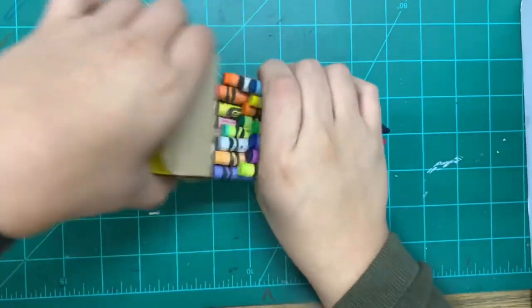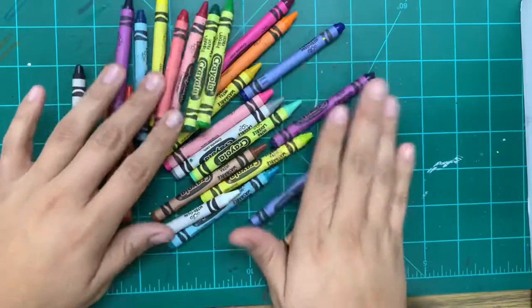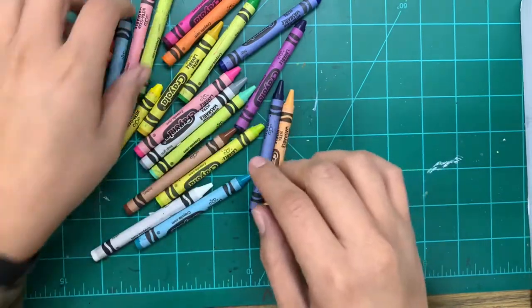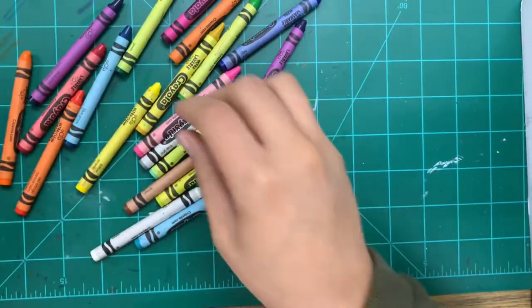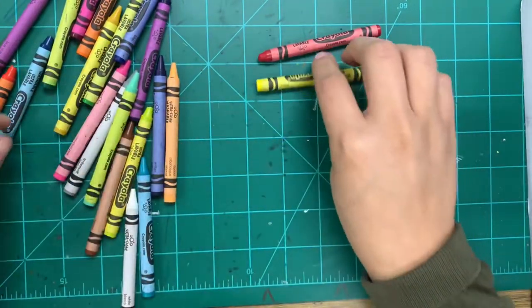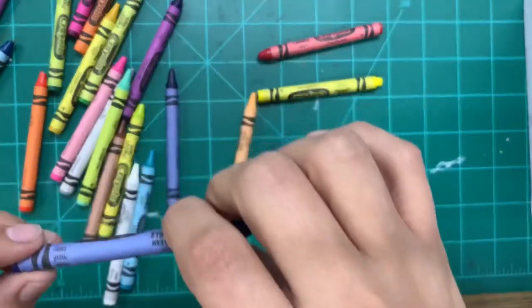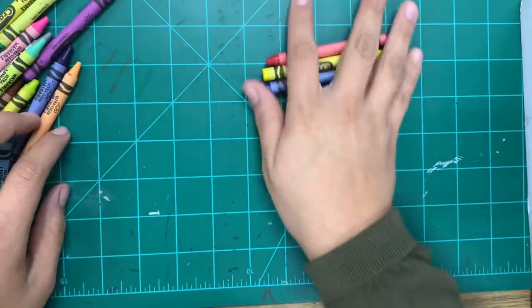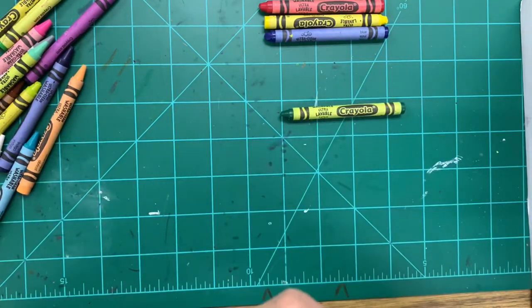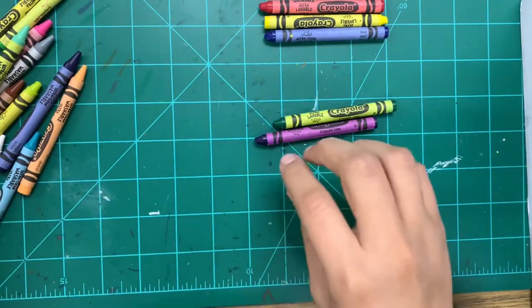So here I have my crayons. And right now what we're going to be doing is separating our crayons into our primary colors, secondary, and tertiary. Our primary colors should be red, yellow, and blue. These are our primary colors. And next we need to find our secondary colors, which are green, violet or purple, and orange.